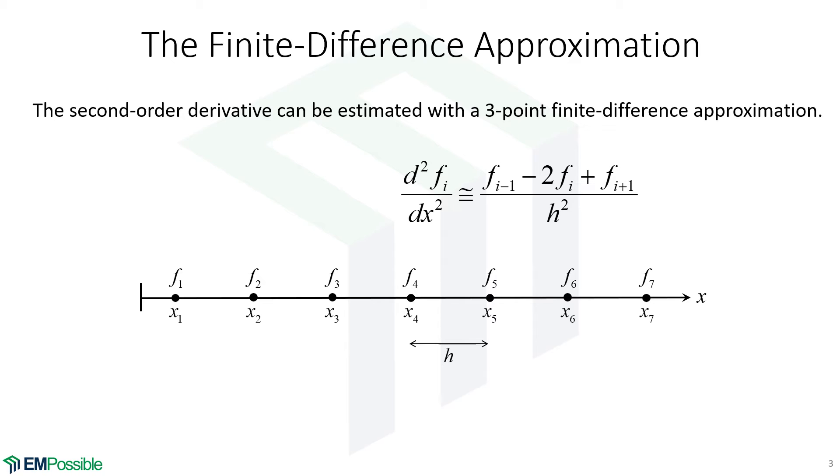We're armed with finite difference approximations, and we've learned how to derive them. Here is the one we will use to estimate a second order derivative. It involves three points. This finite difference approximation will calculate the second order derivative at the midpoint and it will use function values from either side of that.